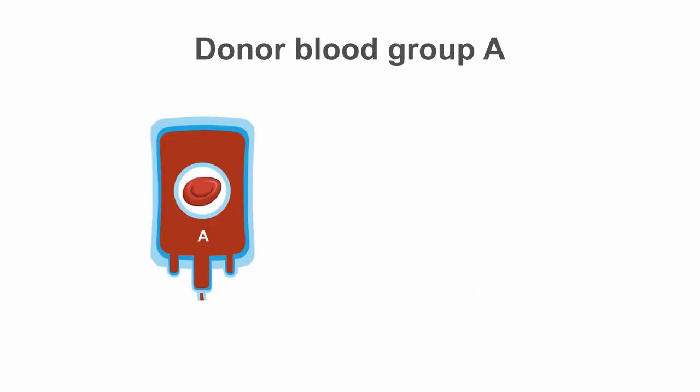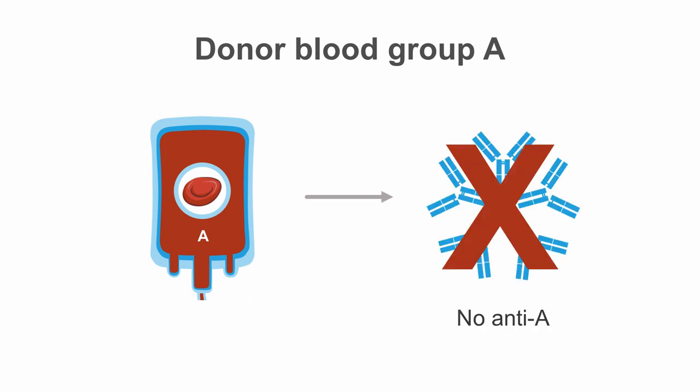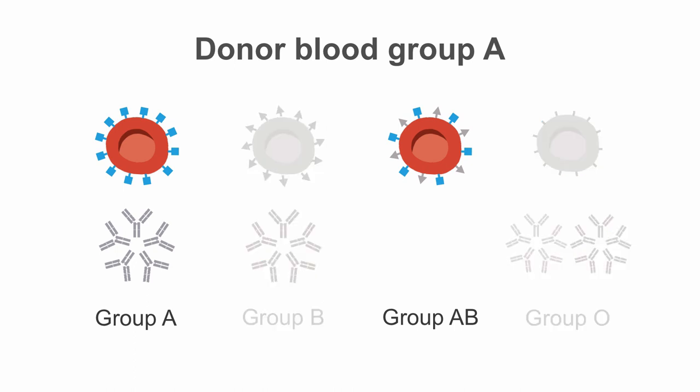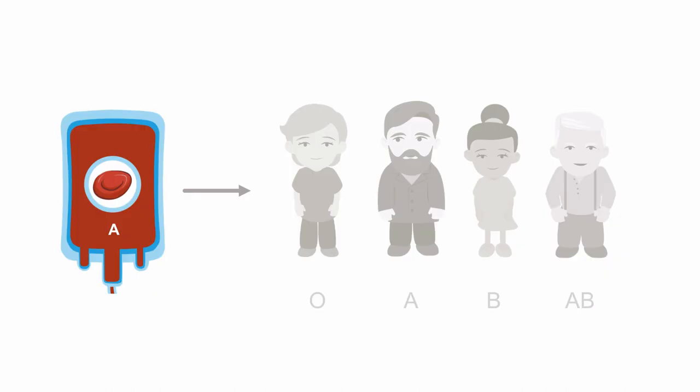Who can you transfuse with blood group A? You want to avoid interactions between the A antigen on the donor RBC and anti-A in the patient's plasma. So the answer is you can transfuse A blood to all patients with no anti-A in their plasma. Looking at our table, that strikes out group B and group O. So patients with blood group A or AB can receive blood group A donor blood.